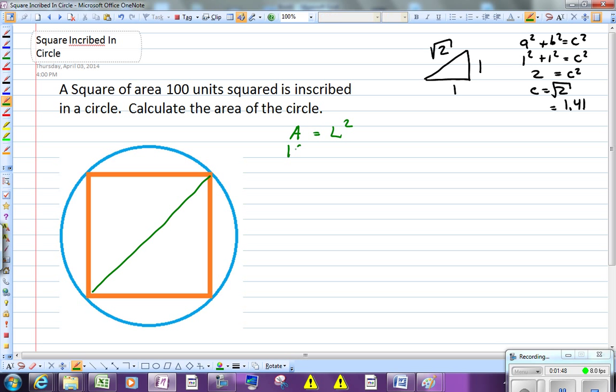So if that's 100, l squared equals 100, the length of each of those sides of the square must be 10. So this is 10, this is 10, and frankly this is 10, and this is 10.